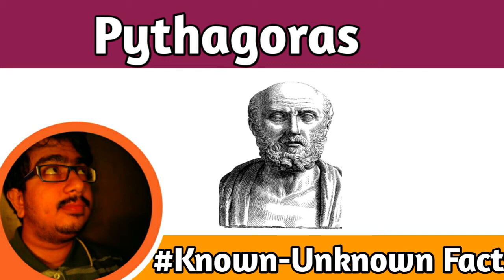His teachings on ethics, politics, and brotherhood had a great effect on the people there. His thoughts and ideas flourished throughout most parts of Italy and Greece, but all this eventually died out towards the end of the 4th century BC, largely because of opposition from some quarters. Apart from his philosophical thinking, his contributions are also credited with the mathematical concepts of the functional significance of numbers.